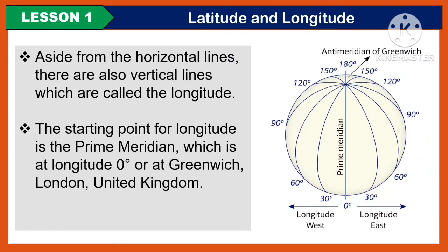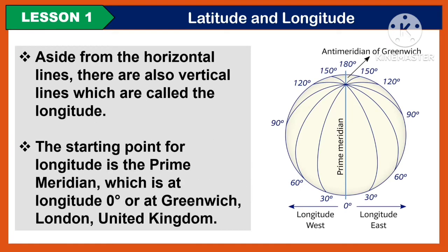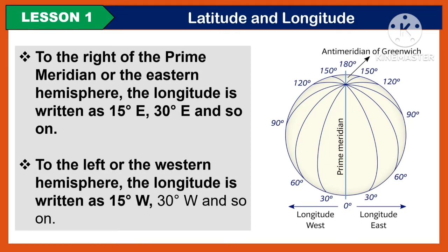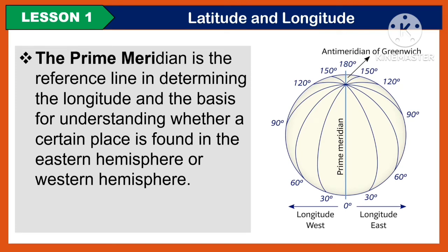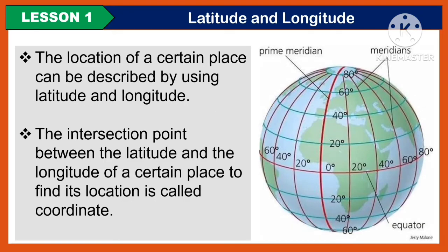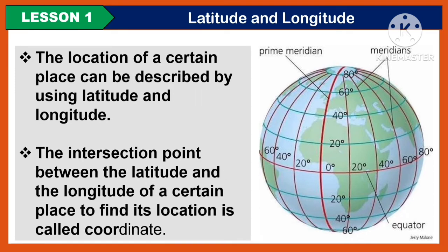Aside from the horizontal lines, there are also vertical lines which are called the longitude. The starting point for the longitude is the prime meridian, which is at zero degrees, or at Greenwich, London, United Kingdom. To the right of the prime meridian, or the eastern hemisphere, the longitude is written as 15 degrees east, 30 degrees east, and so on. The prime meridian is the reference line in determining the longitude and the basis for identifying whether a certain place is found in the eastern or western hemisphere. The location of a certain place can be described by using latitude and longitude. The intersection point between the latitude and the longitude of a certain place to find its location is called the coordinate.